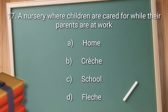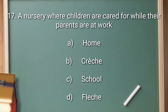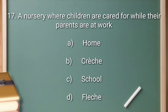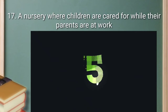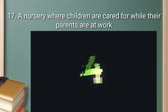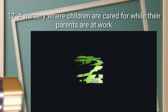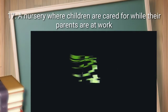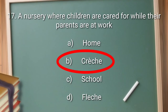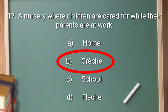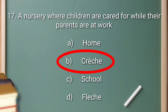Question number 17: a nursery where children are cared for while their parents are at work. Option A: home. Option B: crèche. Option C: school. Option D: fletch. The right answer is option B: crèche.